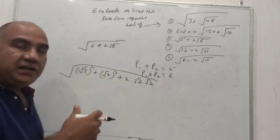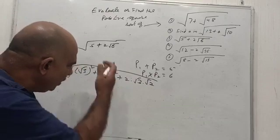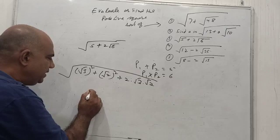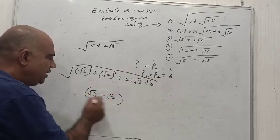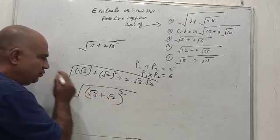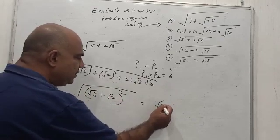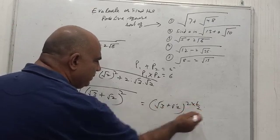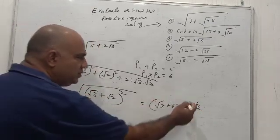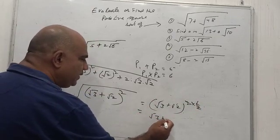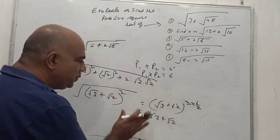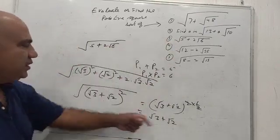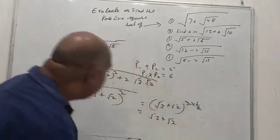Now I recognize this as a² + b² + 2ab, so it can be written as (√3 + √2)² under the square root. This can be further written as (√3 + √2)² raised to the power one-half. The square and the power one-half cancel, so the answer is √3 + √2. This is the positive square root of the original quantity.